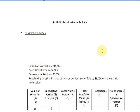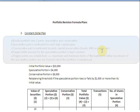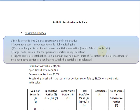Number one, the speculative portion of the portfolio, and number two, the conservative portion of the portfolio. The speculative part is motivated towards high capital gains, whereas the conservative part aims at preserving the capital. In the conservative part, you could decide to invest the money in bonds, money market accounts, or similar securities.